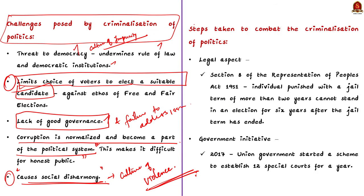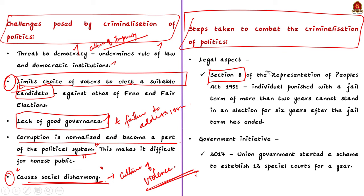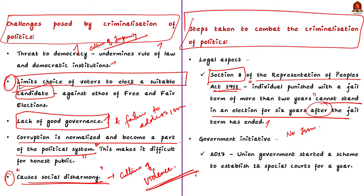Now moving on to the third part — the steps taken to combat the criminalization of politics. Firstly, legal steps: Section 8 of the Representation of People Act 1951 provides for disqualification upon conviction for certain offenses. According to this act, an individual punished with a jail term of more than two years cannot stand in an election for the next six years after their jail term is over. However, the law does not bar individuals with pending criminal cases from contesting elections, so disqualification depends on conviction.